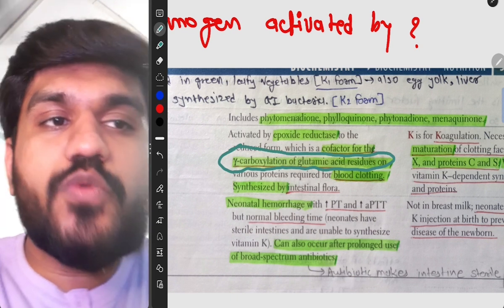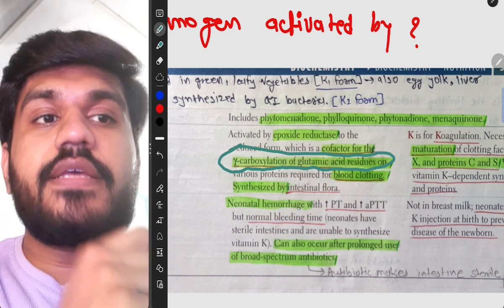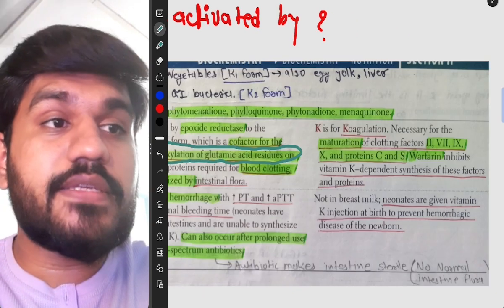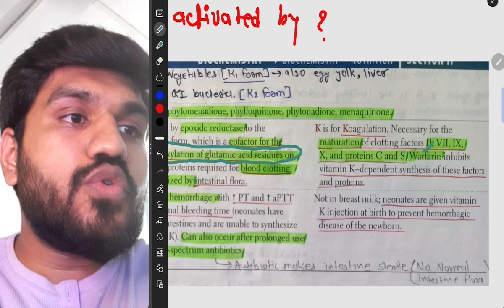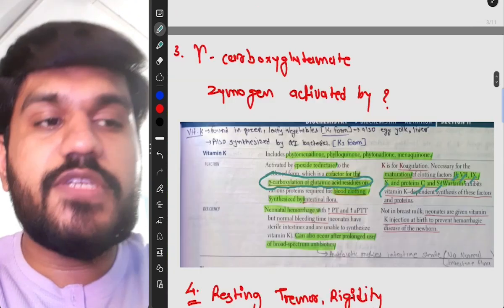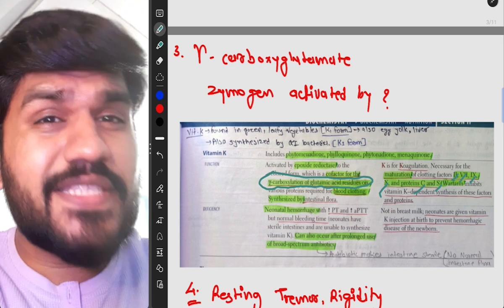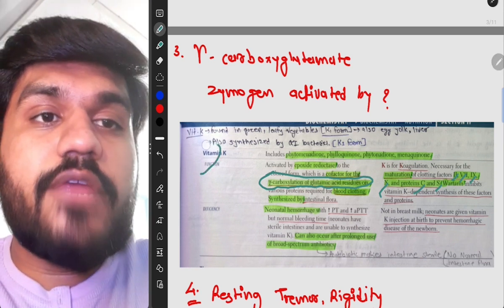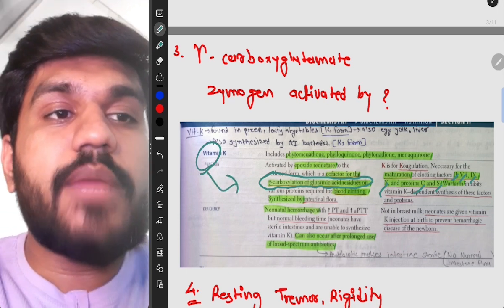And it is nicely written here as you can see, gamma carboxylation of the glutamic acid residue on various protein required for blood clotting, synthesized by intestinal flora, and blood clotting factors are also given here which are necessary. This is 2, 7, 9, 10, C and S. So this will be really concise and precise information that you will get from First Aid.